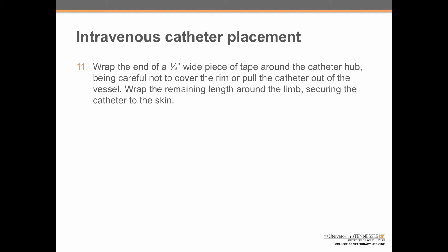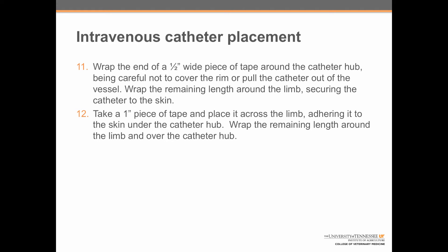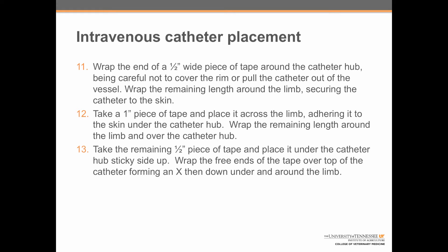Step 11: wrap the end of a one-half-inch wide piece of tape around the catheter hub, being careful not to cover the rim or pull the catheter out of the leg. Wrap the remaining length around the limb, securing the catheter to the skin. Step 12: take a one-inch piece of tape and place it across the limb, adhering it to the skin under the catheter hub, then wrap the remaining length around the limb and over the hub. Step 13: take the remaining half-inch piece of tape, place it under the catheter hub sticky side up, wrap the free ends over the top forming an X, and then down and around the limb. Step 14: slowly flush the catheter with saline to confirm its patency.